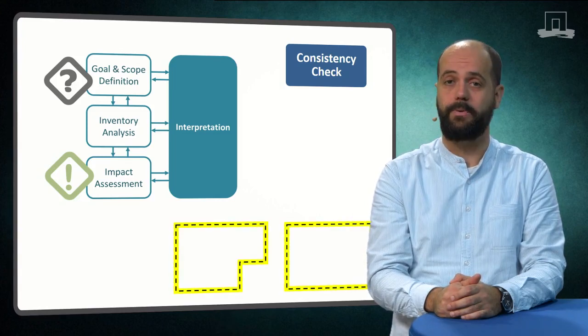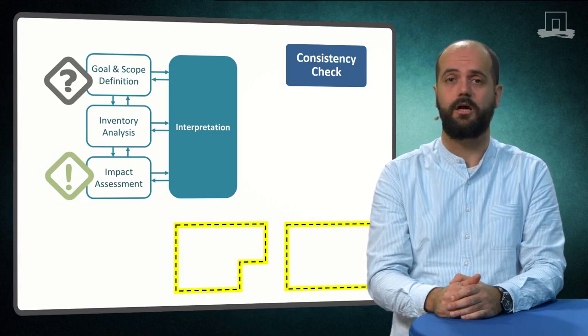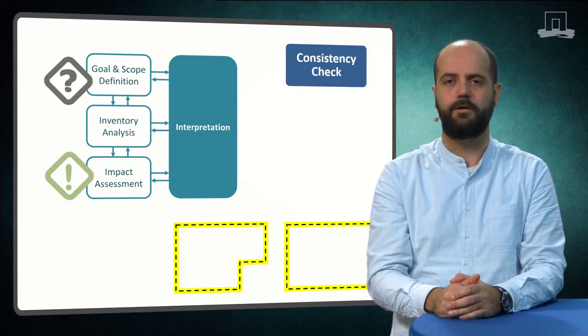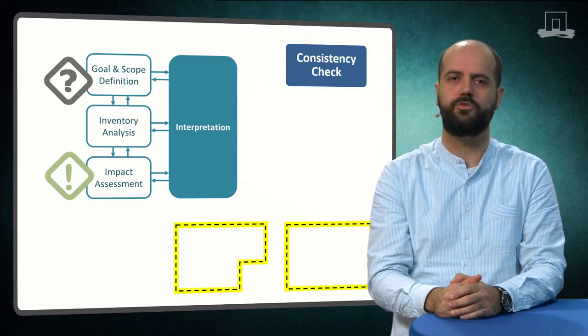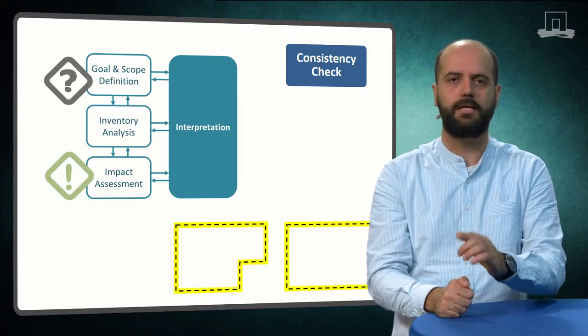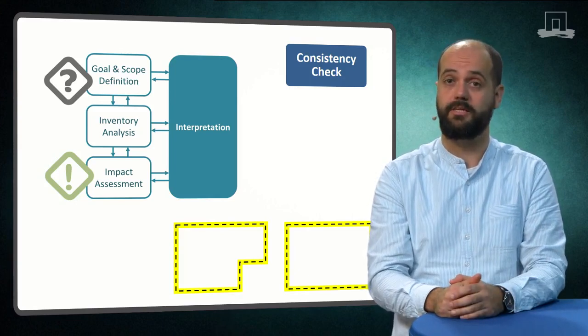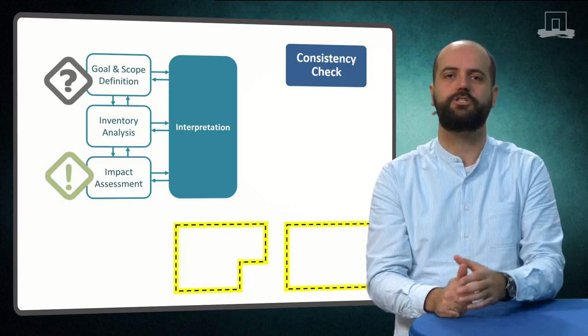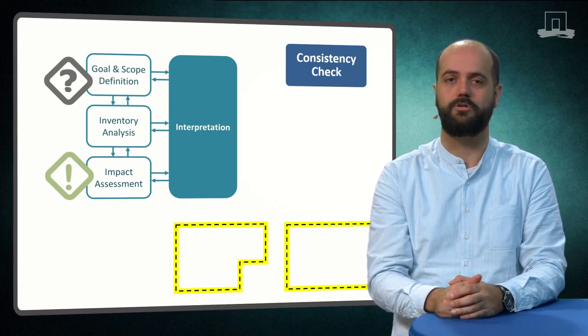We need to make sure that when comparing alternative products, our system boundaries are the same across the alternatives. From here, we should try to reduce inconsistency throughout our LCA, particularly with regard to our choices about the data and assumptions we used. Here are six questions you can ask yourself when performing a consistency check.